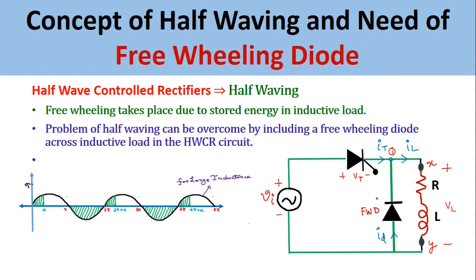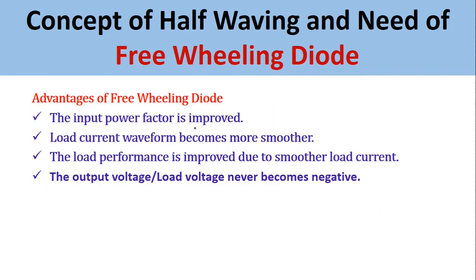Now let us see the advantages of the freewheeling diode used in the half wave control rectifier. First, the input power factor is improved. Second, the load current waveform becomes smoother. Third, the load performance is improved due to smoother load current. And finally, the load voltage never becomes negative in the negative half cycle, because the freewheeling diode takes the energy stored in the inductor and helps the SCR to turn off during the negative half cycle.